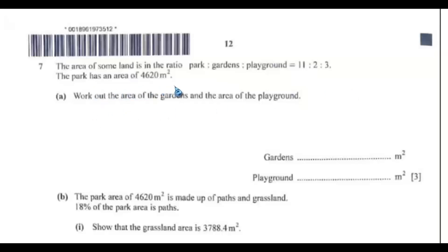Question 7. The area of some land is in the ratio park to gardens to playground 11 to 2 to 3. The park has an area of 4620 meters squared. Work out the area of the gardens and the area of the playground. So what you need to do here, let's write the ratios. So we have park, ratio gardens, ratio playground. So we have 11 to 2 to 3.